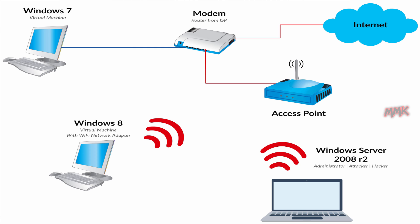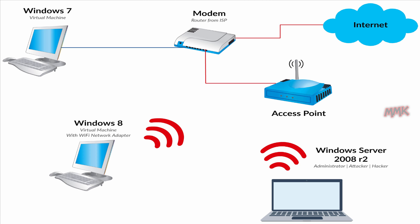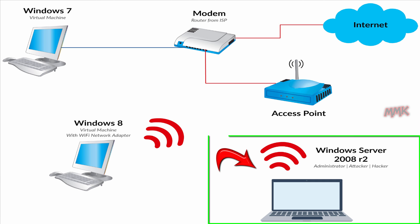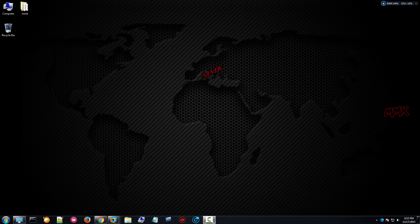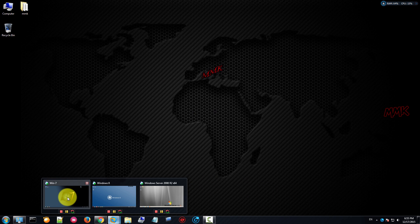The network has 3 computers: Windows 7 with a wired connection, Windows 8 with a Wi-Fi connection, and Windows Server 2008 with admin privileges — meaning he has access to my routers. Let's see what he can do in my network.